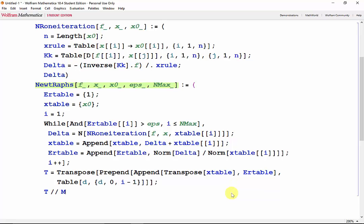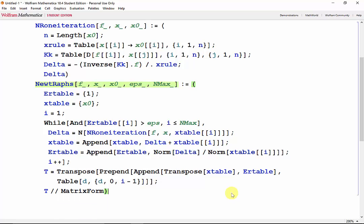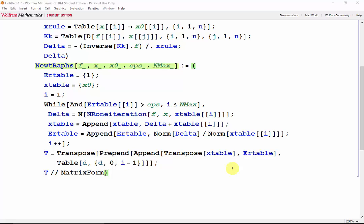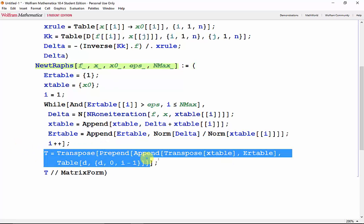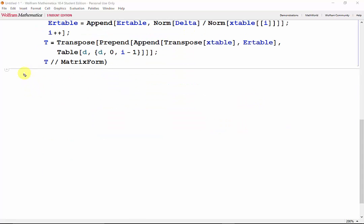Now I'll scroll down so I can illustrate how I made T since this is a bit of a mess. So first we started off with x table which has n rows and m columns depending on how many iterations it took.